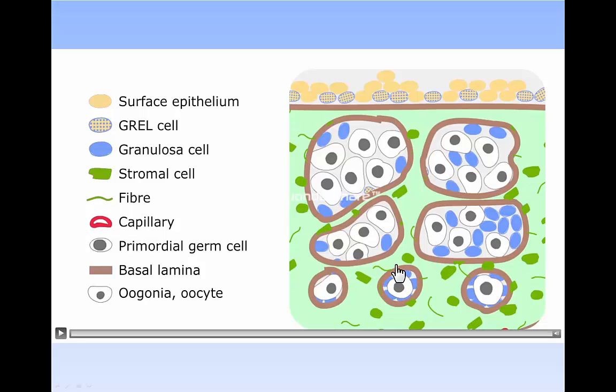At the medullary end of the cords, the stroma appears to penetrate into the cords, breaking them into smaller groups of cells, again composed of GREL cells and germ cells, with a basal lamina at the interface with the stroma. The ovigerous cords continue to break down into smaller cords, and the first primordial follicles, containing an oocyte and pre-granulosa cells, are formed in the inner cortex medulla region, surrounded by basal lamina. This basal lamina is now referred to as the follicular basal lamina.